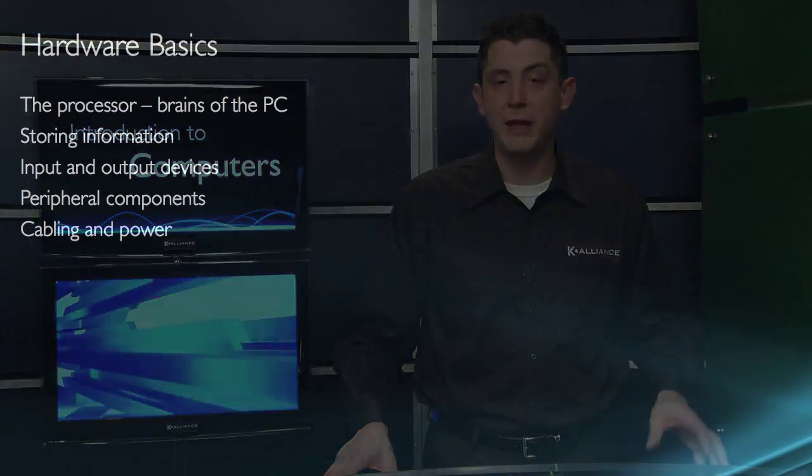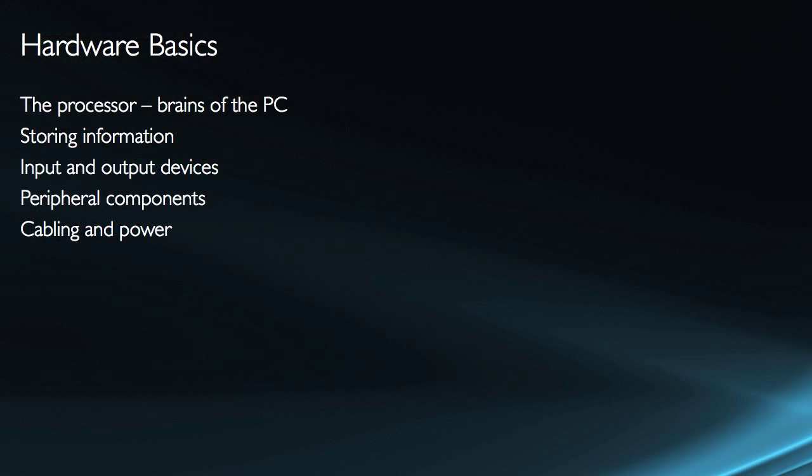I have to be able to tell the computer what to do and I'll do that with an input device like a mouse or a keyboard. And the computer has to be able to tell me what's happening. The primary output device for doing that would be the monitor, but you also have the output devices of printers and speakers and those kinds of things.